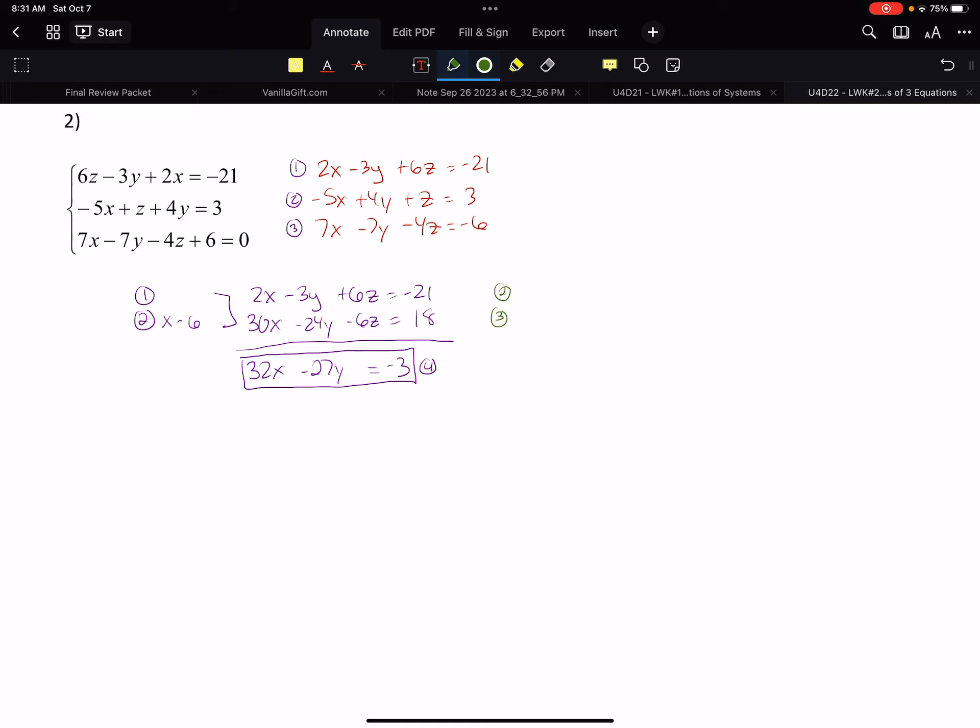I need to do this again, so I'm going to take equation 2 and equation 3. This time I'm going to multiply equation 2 by 4. So I have negative 20x plus 16y plus 4z equals 12, over 7x minus 7y minus 4z equals negative 6. I eliminate, so I got negative 13x plus 9y equals 6. There is my fifth equation. What's great about this, the fourth and the fifth equation both are xy's, so I now have an xy system set up.